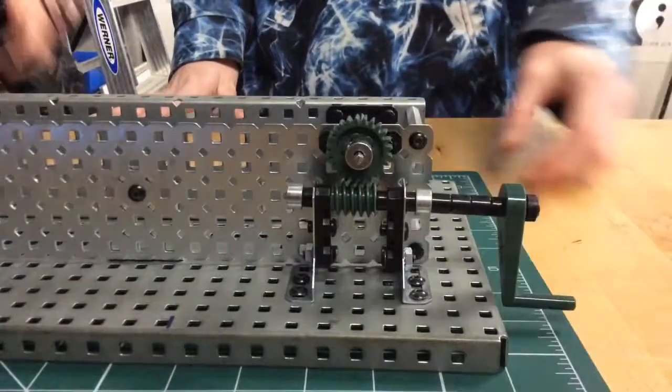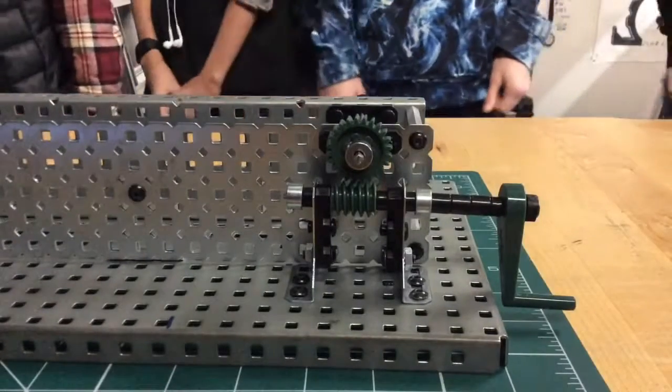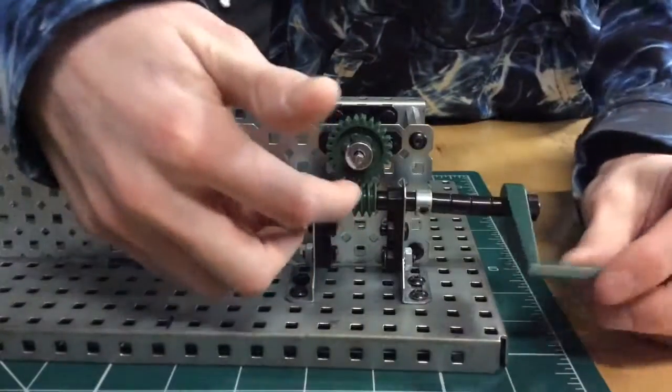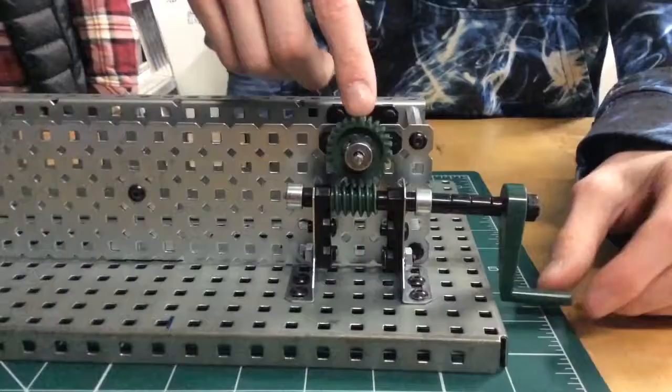This is the worm and wheel mechanism and my name is Anthony. My name is Mila. I'm Digital. And I'm Angelina. The input gear is the worm, right here, and the output gear is the wheel, right here.